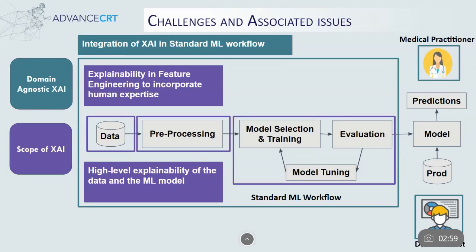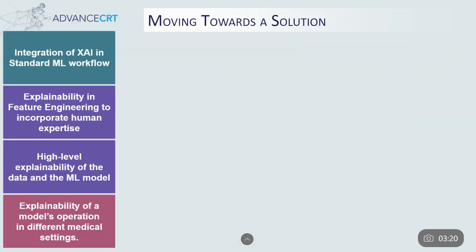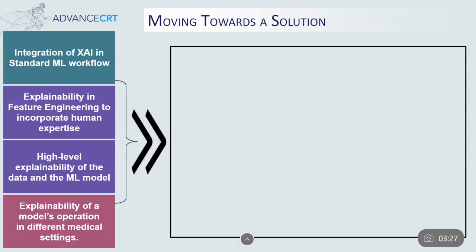The subjective applicability of XAI is another big challenge. For example, in the real world, different healthcare facilities have different levels of access to medical data. It's important to understand how a single model trained for diagnosing a particular disease operates when subjected to these different settings. Based on this identified set of associated issues, we propose a simple yet powerful technique — feature importance — to provide initial steps to solve these issues and enable some level of explainability.